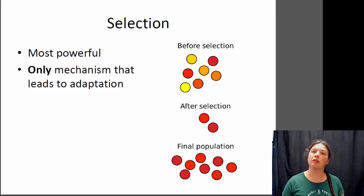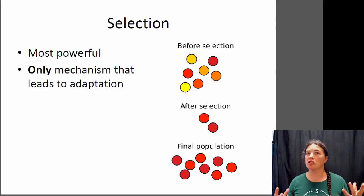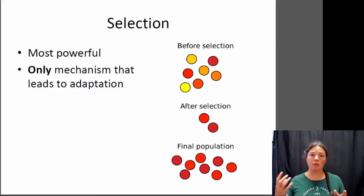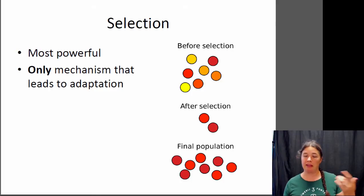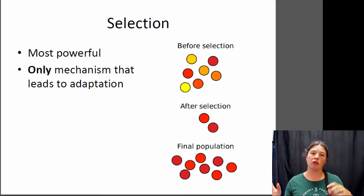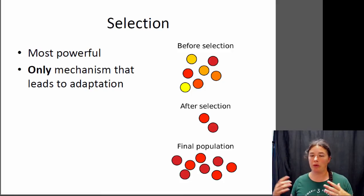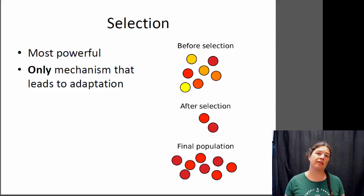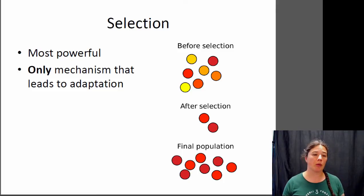If we look at this little population of dots here, we have variation in the color of dots — some of them are yellow, some of them are red, some of them are in between. There's some sort of genetic heritability of that color, so individuals that are red tend to have offspring that are red. For some reason, the red individuals in this population survive better than the yellow individuals. The selective event occurs, most of the yellow individuals die, and when the surviving red individuals reproduce, the subsequent population now has more of that red allele. More of the individuals in that population are red, so evolution has happened. That red phenotype makes the individuals more fit and better able to survive in their environment, so that red color would be an adaptation.